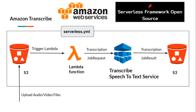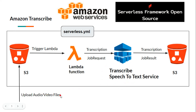Hi all, welcome to LearnIT. In the previous videos of the AWS AI ML track we learned about Amazon Rekognition service and Amazon Polly service. Today we are going to talk about Amazon Transcribe service, which is a speech-to-text service. Using this service we can generate text out of our audio and video files. Some of the use cases are generating transcripts for meetings or generating subtitles for audio/video files.